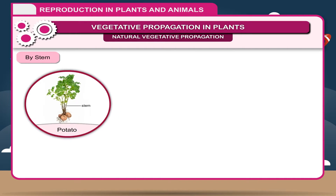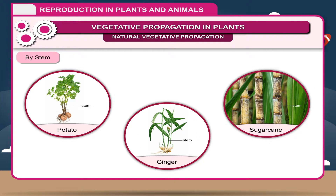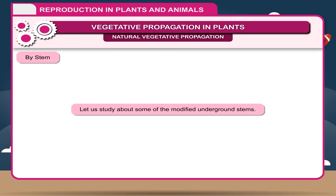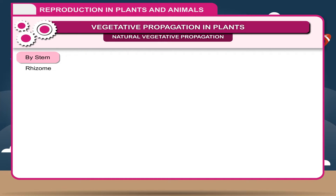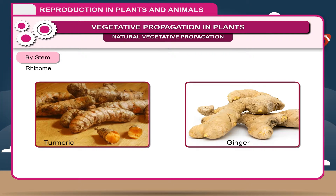By stem. Certain plants reproduce through their stem, like potato, ginger, sugar cane, etc. This is mostly due to underground modifications of stems. Rhizome is the underground modified stem which grows horizontally below the surface of the soil. They have buds which develop into branches. It is fleshy due to accumulation of food material. For example, ginger, turmeric, etc.